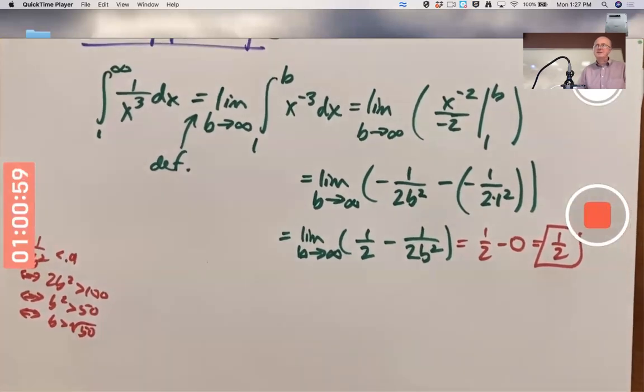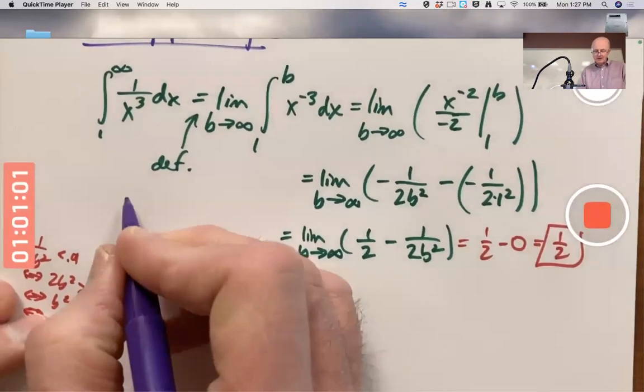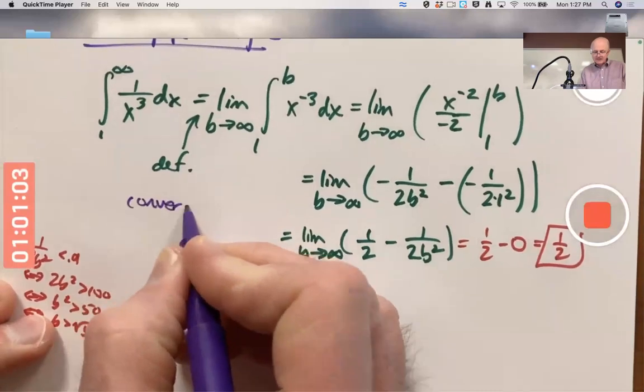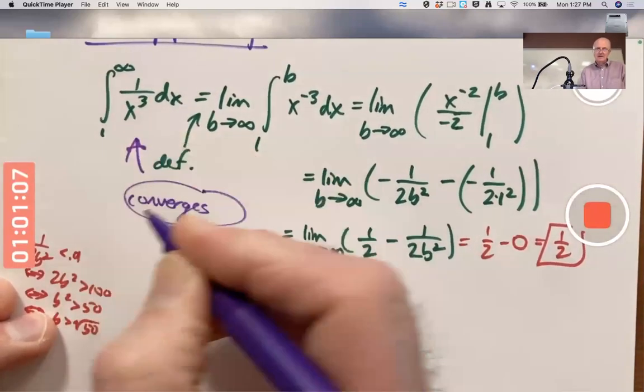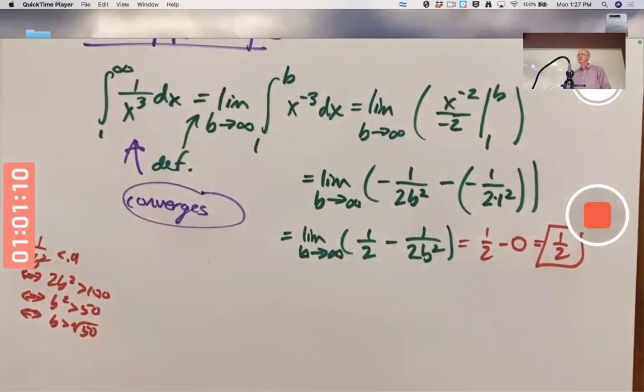That means this improper integral does make sense. We say the improper integral converges because this limit exists. You can say the improper integral converges, or you could say the improper integral is convergent.